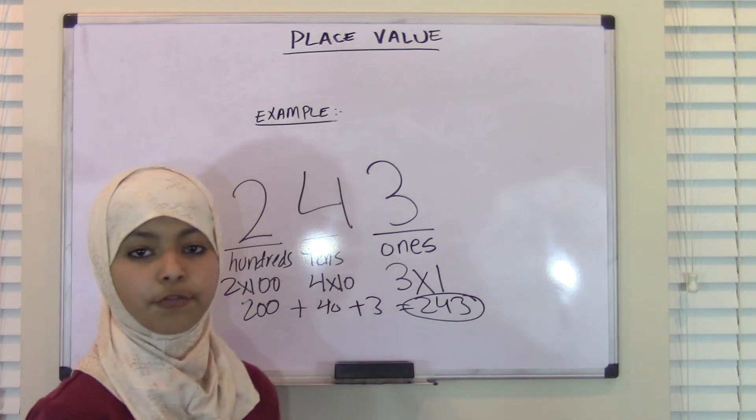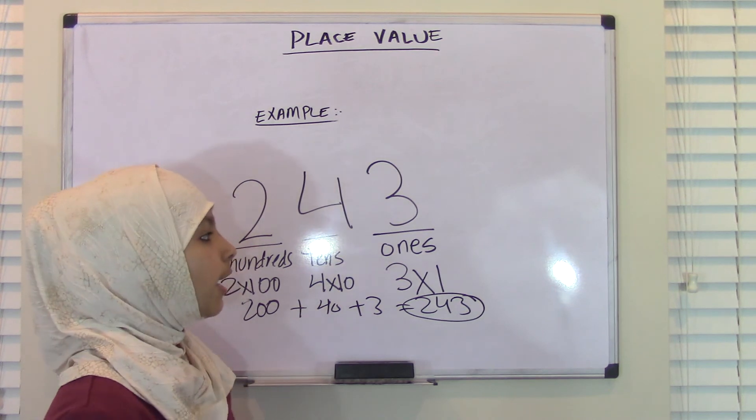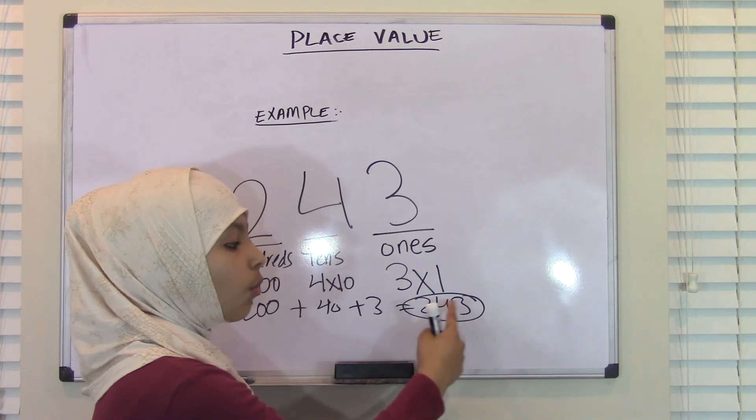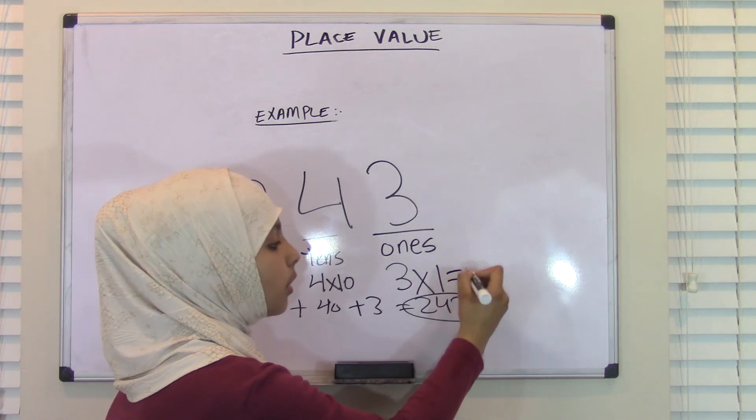So, we just did a lot of stuff from just one simple question. If you just go back, the place value of 3 is 3 1's or 3 because 3 times 1 equals 3.